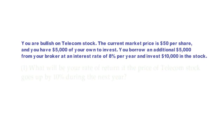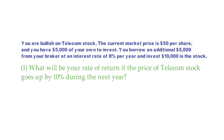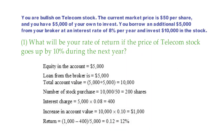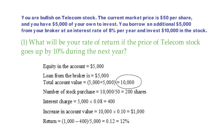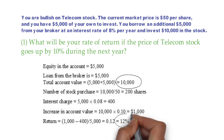Question number one: What will be your rate of return if the price of telecom stock goes up by 10% during the next year? Equity in the account is $5,000. Loan from the broker is $5,000 also. So the total account value is $10,000. Number of stocks purchased is $10,000 divided by 50, which is 200 shares. The interest charge is $5,000 times 8%, which is $400. Increase in account value is $10,000 times 10%, which is $1,000. So the return on investment is $1,000 minus $400 divided by $5,000, which is 12%.